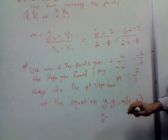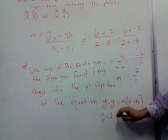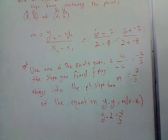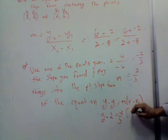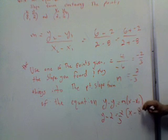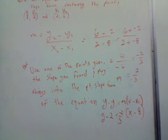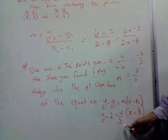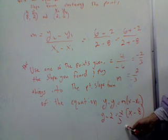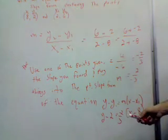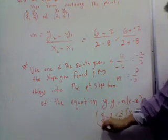So what would we get? Y minus Y1, which is equal to 2, equals negative 2 thirds times X minus 8. You see that, guys? If you're asked to put this in a different form, you can. You can put it in Y equals MX plus B form. But in this case, they said write an equation of the line in point-slope form. So you're done right there. You're finished with that.